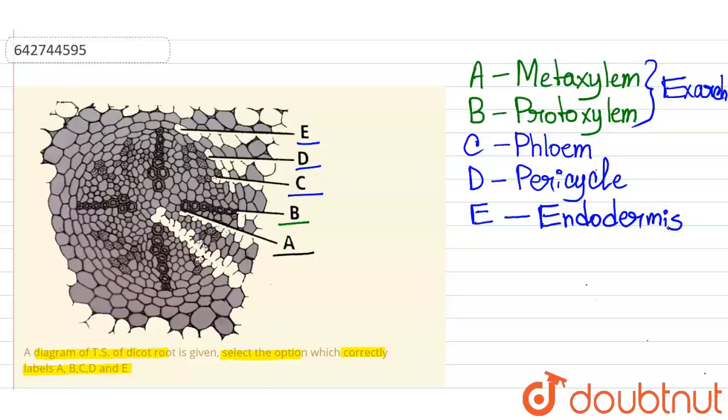In a dicot root, the pericycle is located between the vascular bundles and the endodermis.